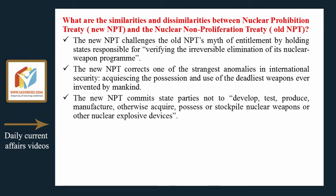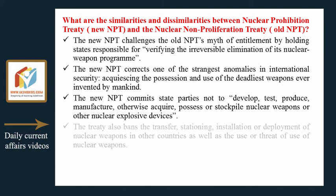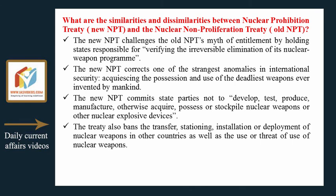The new NPT commits state parties not to develop, test, produce, manufacture, otherwise acquire, possess, or stockpile nuclear weapons or other nuclear explosive devices. The treaty also bans the transfer, stationing, installation, or deployment of nuclear weapons in other countries, as well as the use or threat of use of nuclear weapons.